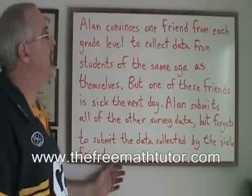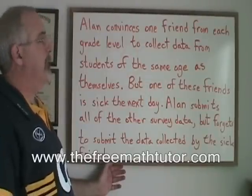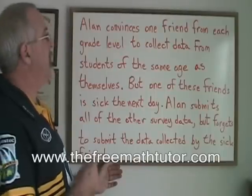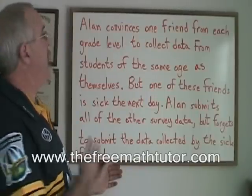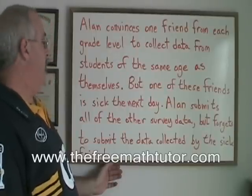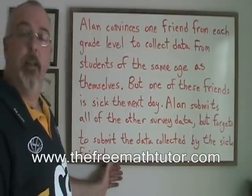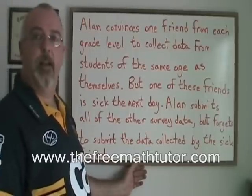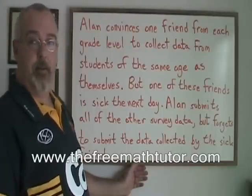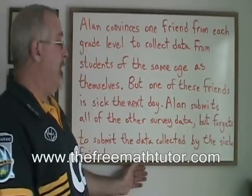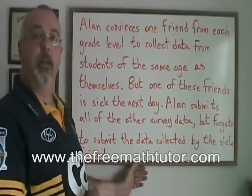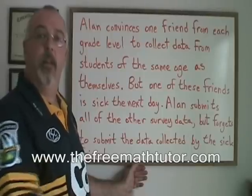Another student asked to collect data is Alan. Alan is a bit lazy, but he does a good job of stratifying the data — he convinces one friend from each grade level to collect data from students of the same age. However, one of these friends is sick the next day and Alan forgets to submit that friend's data. This is an example of bias caused by data handling error. He was collecting the data in a good way, but forgot to submit all results from one grade level, so the desires of students from that grade level are not included.